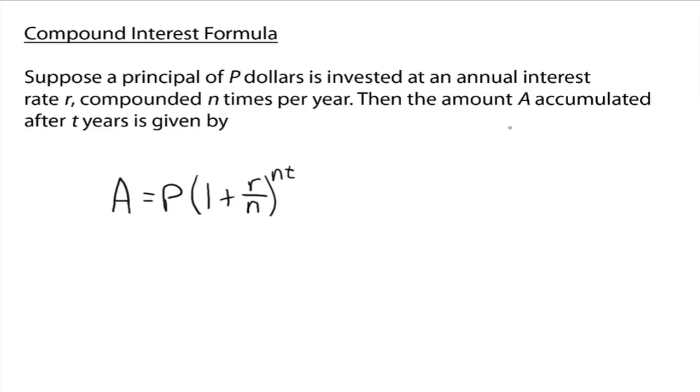Then the amount A is just how much there would be in the account when you're all done.